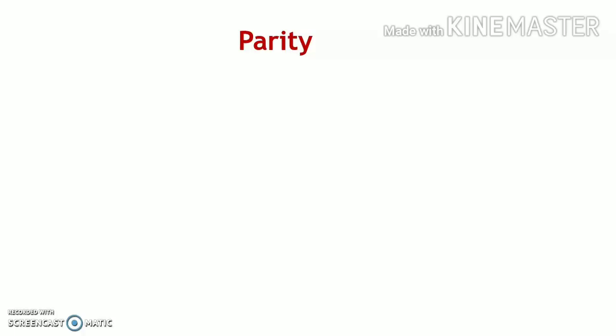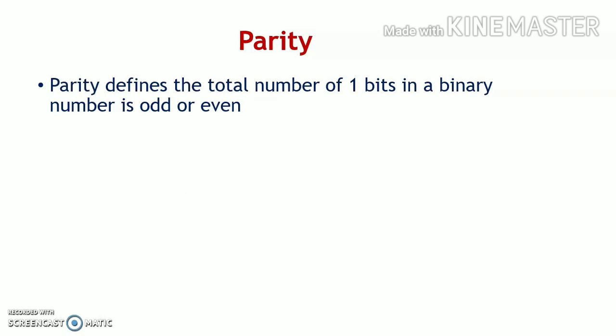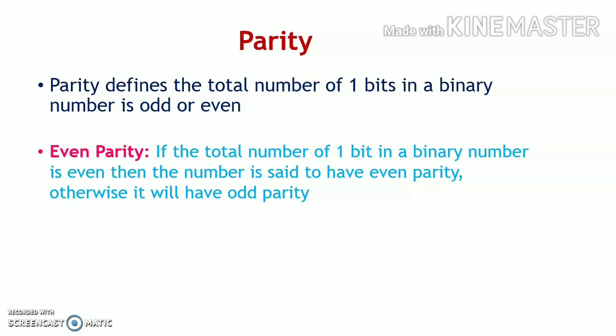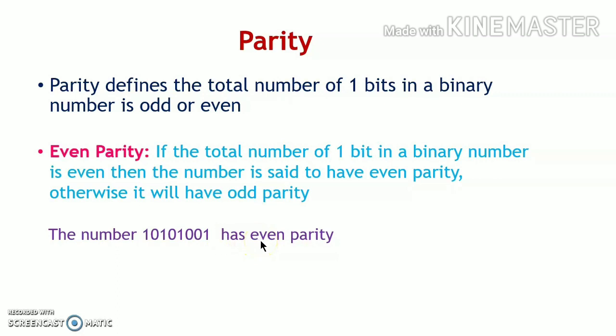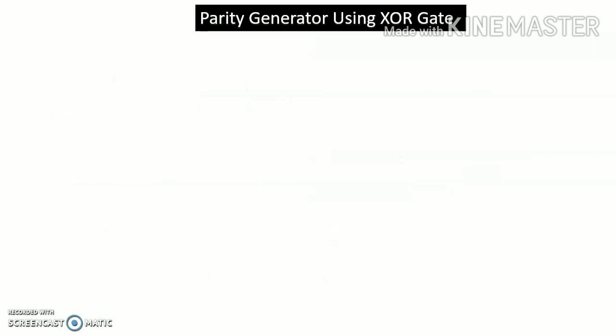Now let us see the parity generator. First, what is parity? Parity defines whether the total number of 1-bits in a binary number is odd or even. If the total number of 1-bits in a binary number is even, the number is said to have even parity; otherwise it has odd parity. For example, in a number with four 1s, that number has even parity. In a number with five 1s, that number has odd parity.